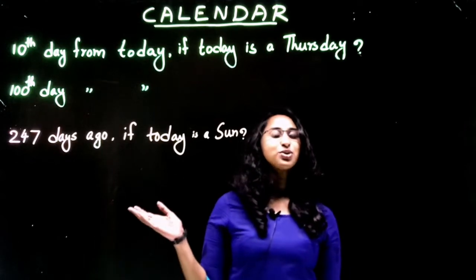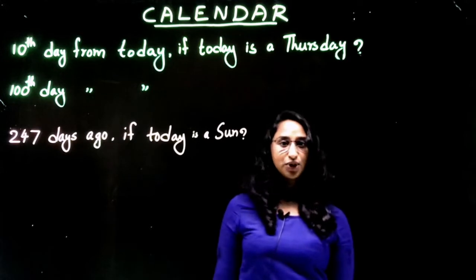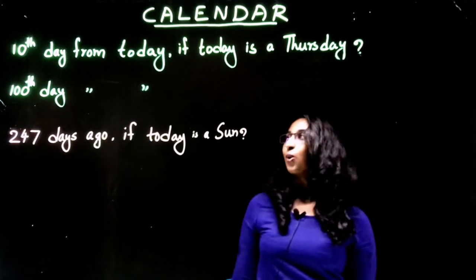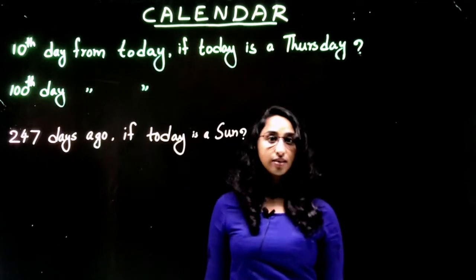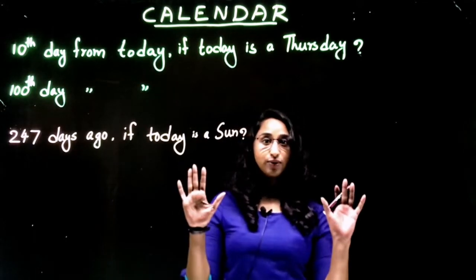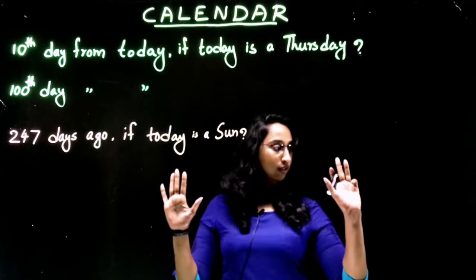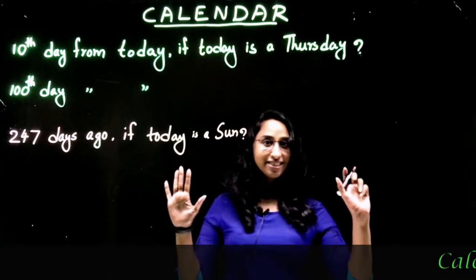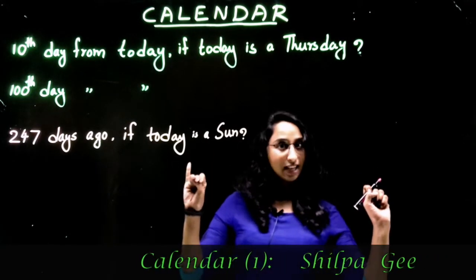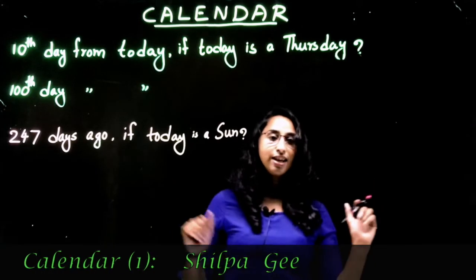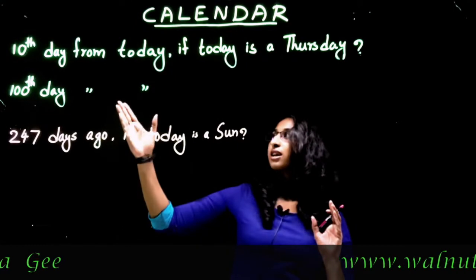Hi guys, welcome back to the Walnut. Today let's look at the topic of Calendar. First one: find the 10th day from today if today is a Thursday. So, have ten fingers, can count it on here. Thursday plus one is Friday, Saturday, Sunday, Monday, Tuesday, Wednesday, Thursday, Friday, Saturday, Sunday. Sunday is the answer.